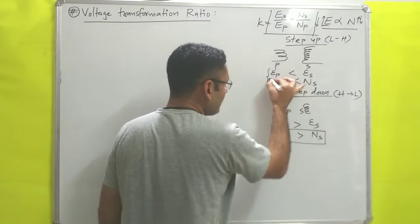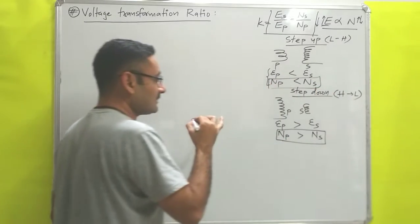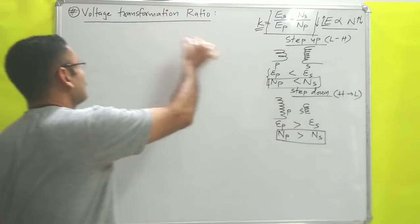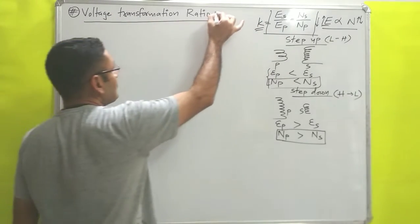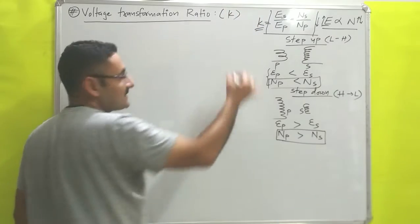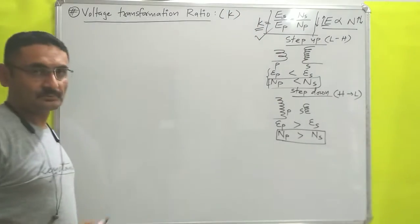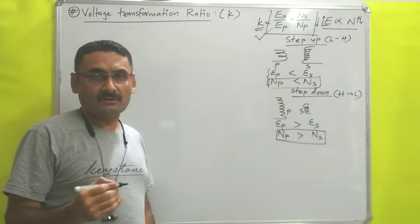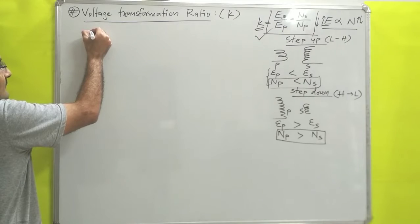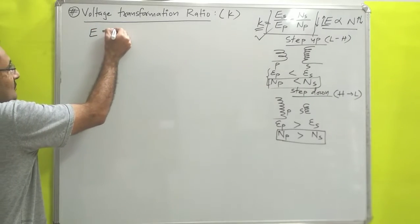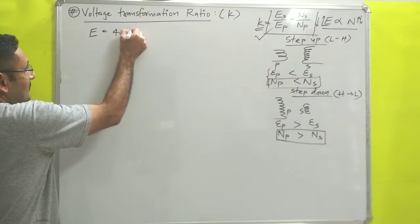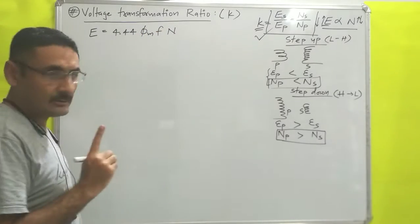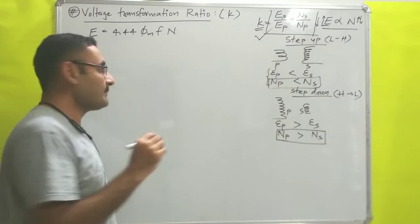We are recalling this because it will help us understand the meaning of K — the voltage transformation ratio. Now we will derive the same equation in another way. We know that the EMF equation of a single-phase transformer is: E = 4.44 × Φm × f × N.